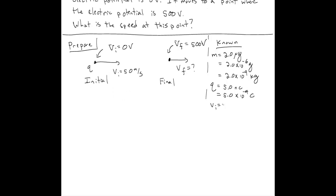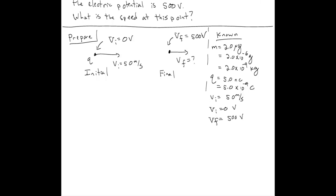The initial speed is 50 meters per second, the initial potential is 0 volts, and the final potential is 500 volts. What we want to find is the final speed Vf, which is the only thing in our diagram that we don't know.